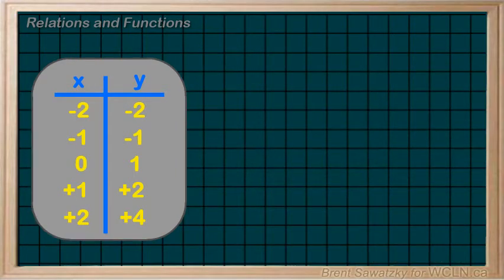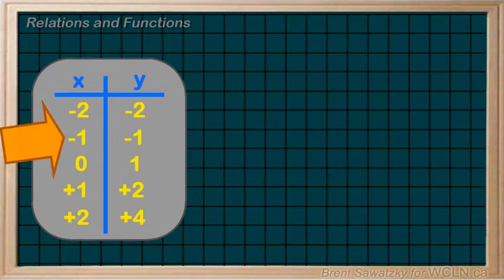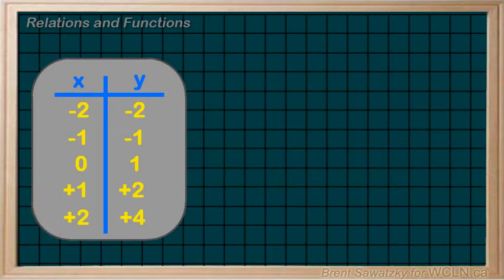Some examples. Are these relations also functions? Thinking back to our criteria: a function has only one y-value for any x-value. This means that for every value on the left — the x-value — you need to have only one value on the right — the y-value. For example, this table is definitely a function, in that no x-value is repeated. Thus, there's only one y-value for any given x-value.